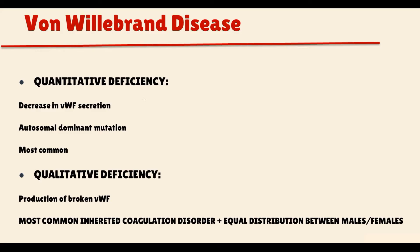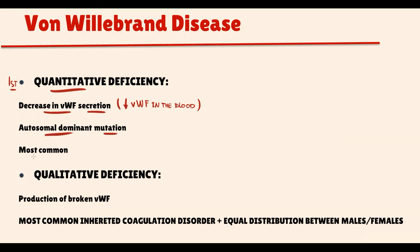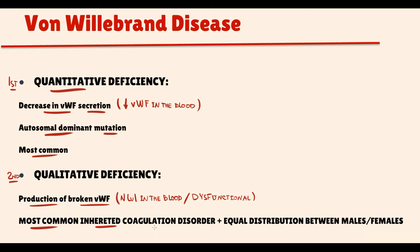Von Willebrand disease can be generally divided into two subtypes. The first subtype is a condition where von Willebrand factor is not secreted properly, causing the level of von Willebrand factor in the circulation to become extremely low. This deficiency is called quantitative deficiency and is caused by an autosomal dominant mutation. It is the most common subtype of von Willebrand disease. Another possibility is that von Willebrand factor is produced in a broken form, so even with a normal level in the blood, it cannot perform any functions. Von Willebrand disease is the most common inherited coagulation disorder, with equal distribution between males and females.